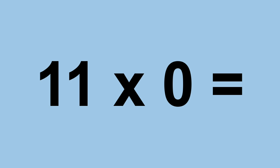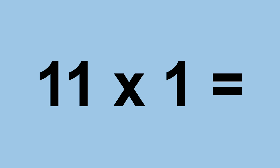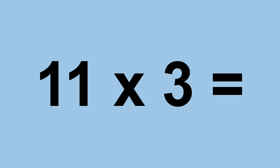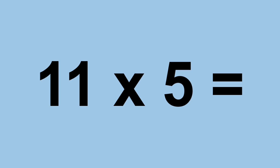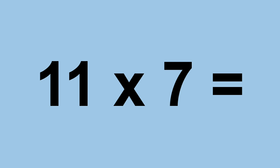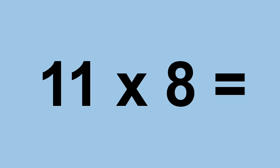Eleven times zero equals zero. Eleven times one equals eleven. Eleven times two equals twenty-two. Eleven times three equals thirty-three. Eleven times four equals forty-four. Eleven times five equals fifty-five. Eleven times six equals sixty-six. Eleven times seven equals seventy-seven. Eleven times eight equals eighty-eight.